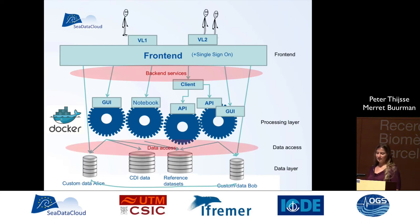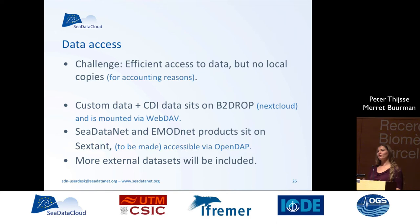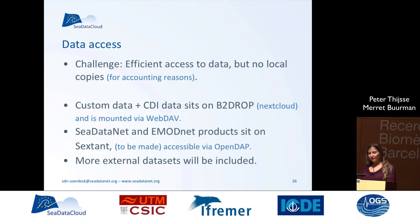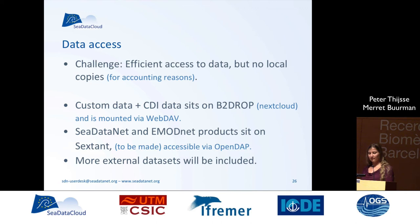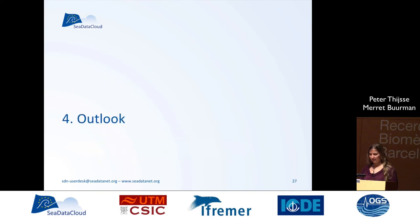Another very important part is data access. We have a challenge there because we want to provide efficient data access, but at the same time we don't want to go with simple local copies. Local copies are easiest and most efficient, but for accounting reasons we don't want to go down that road. For custom data and CDI datasets, they will be stored in B2Drop, the Nextcloud instance, and mounted using WebDAV into the different services. SeaDataNet products and EmodNet products are sitting in the B2Safe service and will be accessed by the OPeNDAP protocol. There will also be other external datasets that are popular in the community, though that is still a work in progress.